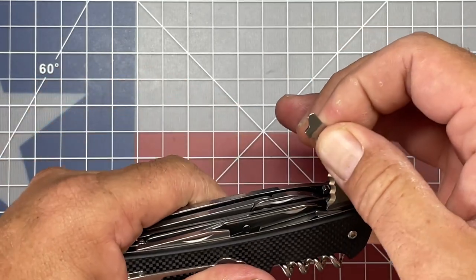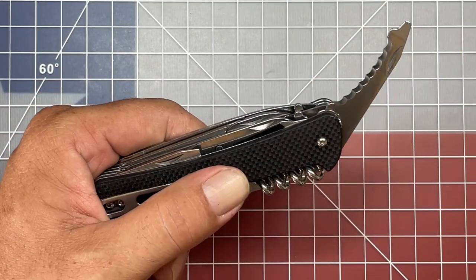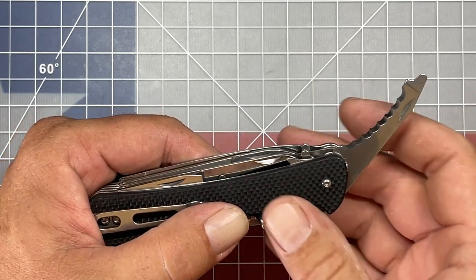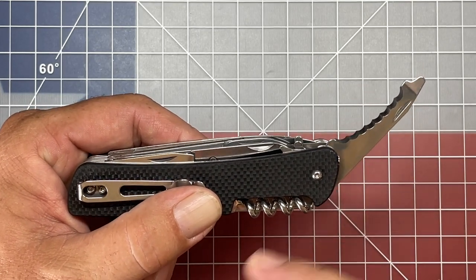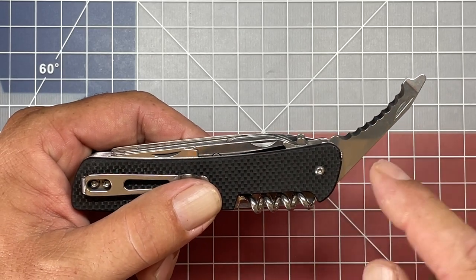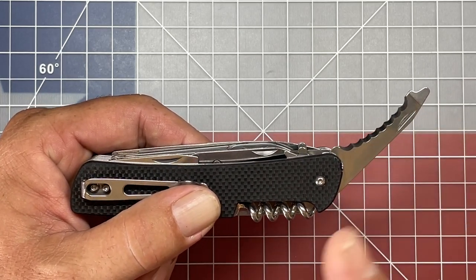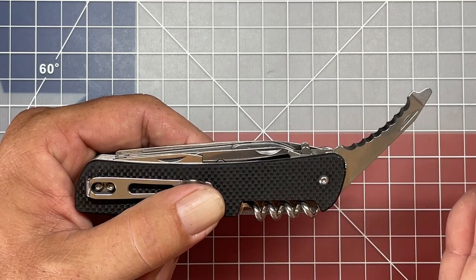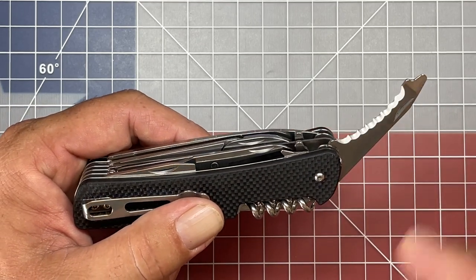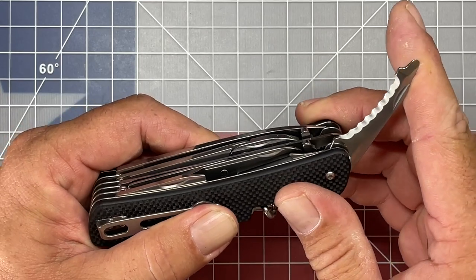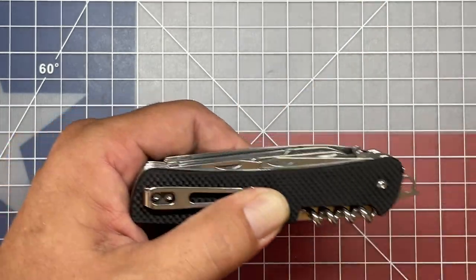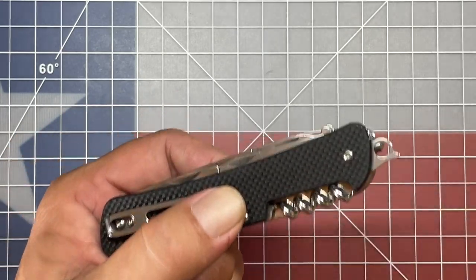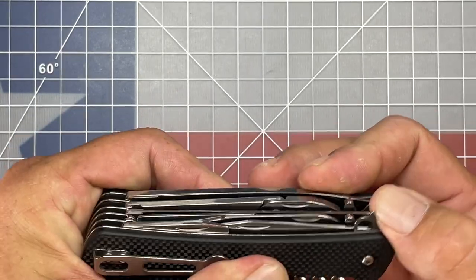The first tool is this rope cutter that they have integrated. You'll notice it doesn't come out fully open - it stops at about a 45-degree angle. I haven't had a chance to try yet, but we're definitely going to give it a look. Next to that, they have a fold-out lanyard loop if you wanted to add a lanyard to this knife.